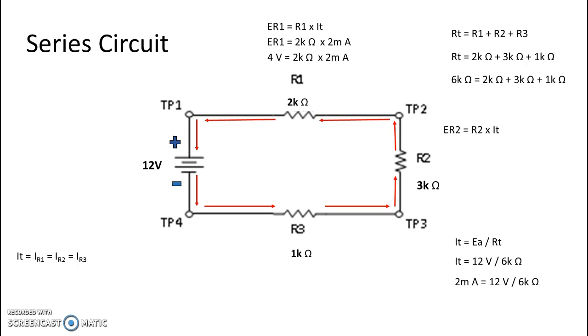I do the same for the other two components. R2 is equal to R2 multiplied by total current, 3k ohms times 2 milliamps gives me 6 volts. And for R3, I take an ohmic value of 1k ohms for the resistance of R3 and 2 milliamps total current to get 2 volts. And you will notice that 2 volts and 6 volts and 4 volts add up to 12 volts.